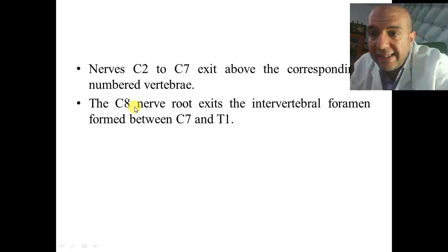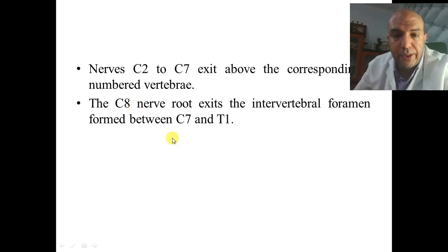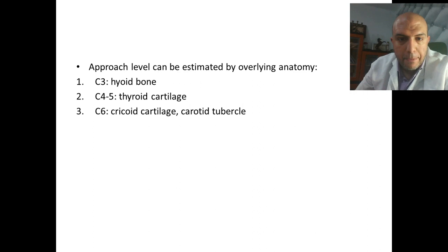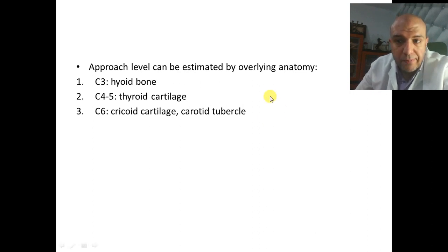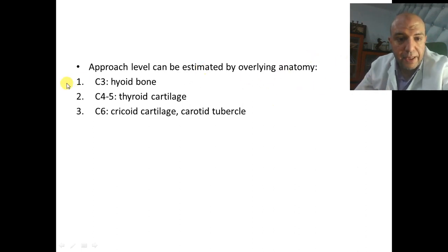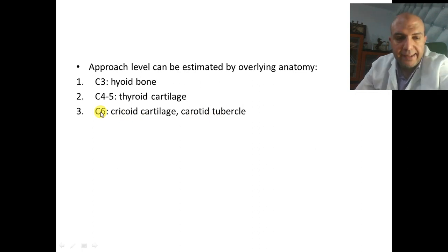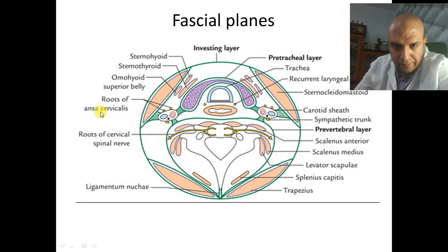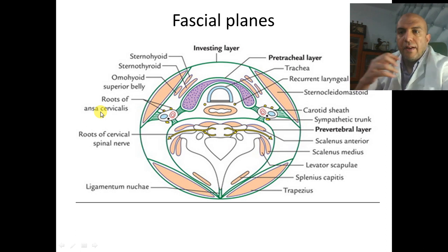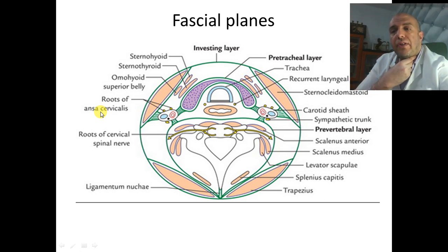C8 has no corresponding vertebra. Other important landmarks in the cervical spine: the hyoid is at C3, the thyroid cartilage is between C4 and C5, and the cricoid and carotid tubercle are at C6. The anterior cervical approach is an important classic approach to the cervical spine and you need to know every detail about it.